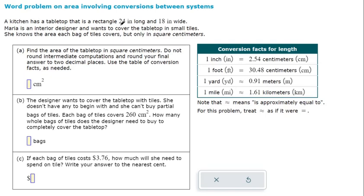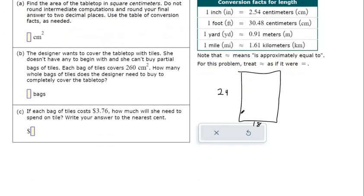We're told there's a tabletop 24 inches long and 18 inches wide, so 24 by 18. We're supposed to find the area of the tabletop in square centimeters.